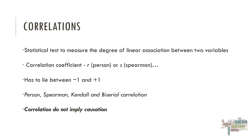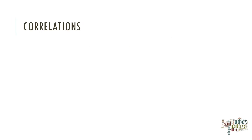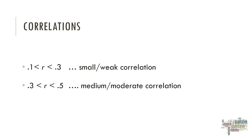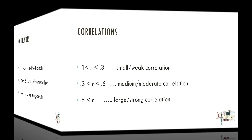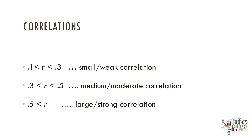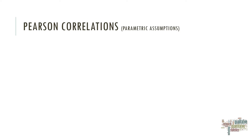Correlations typically fall between minus one and plus one. Correlations between 0.1 and 0.3 are described as small or weak correlations. When correlations fall between 0.3 and 0.5, they are described as medium or moderate correlations. And when correlations are higher than 0.5, we typically call this a large or strong correlation. Correlations are based on parametric assumptions, which are important for establishing which statistical tests we must perform.